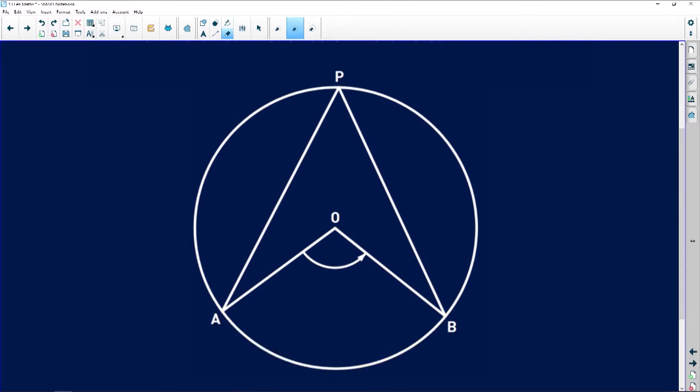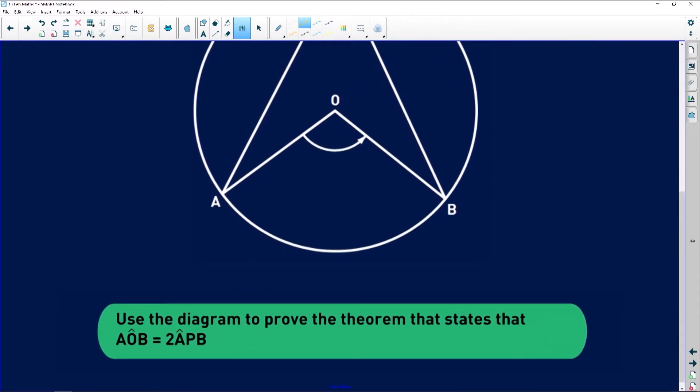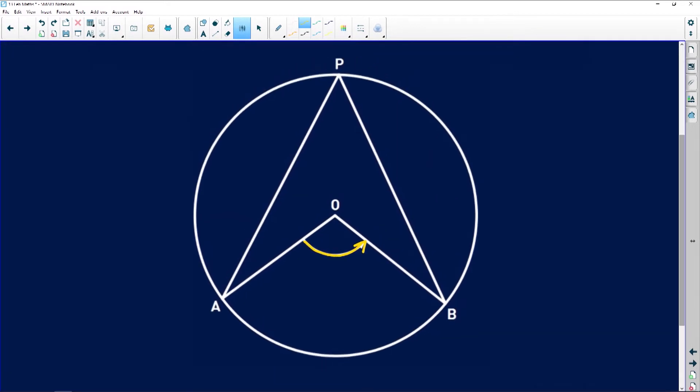So you're going to prove angle at the center is equal to twice angle at the circumference. It says use the diagram to prove the theorem that states that this angle over here is equal to twice angle APB, which is this angle at the circumference.